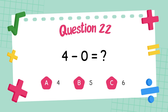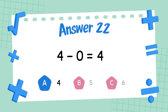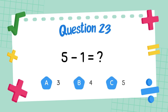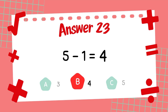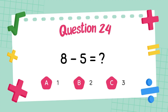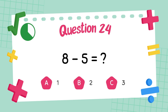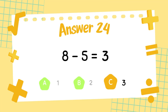What is 4 minus 0? The answer is 4. What is 5 minus 1? The answer is 4. What is 8 minus 5? The answer is 3.